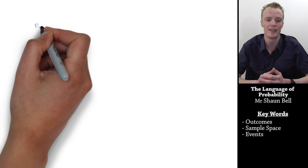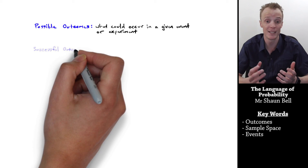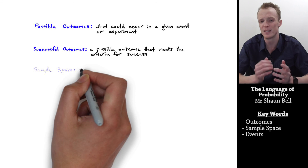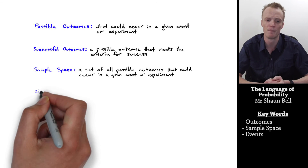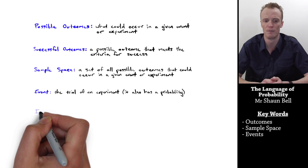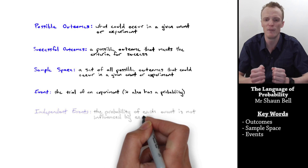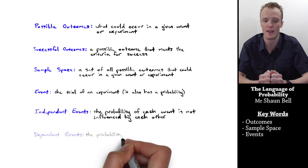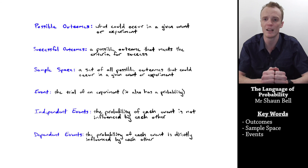So let's summarise the words that we've learnt today. The possible outcomes are what could occur in a given event or experiment, where the successful outcomes are the possible outcomes that meet our criteria of success. The sample space is the set of all possible outcomes that could occur in a given event or experiment, where an event is the trial of an experiment and events have probabilities attached to them. We consider events to be independent of each other if the probability of each event occurring is not influenced in any way by the outcome of the other event, where we consider them to be dependent events if the probability of the second event is directly influenced by the outcome of the first event.